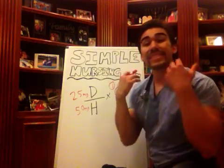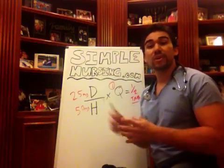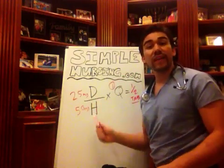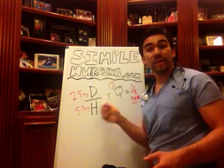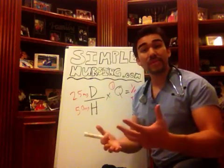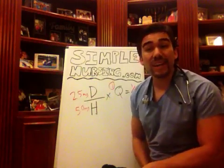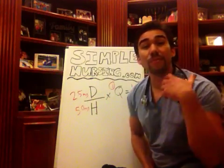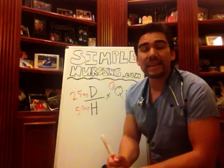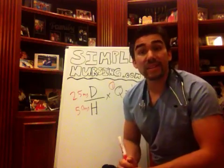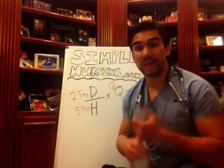This is the simplest way to remember it — drinks are on the house times your quantity. Hopefully that helps guys. We'll see you at SimpleNursing.com where we have more IV calculations, really simple drip rates.